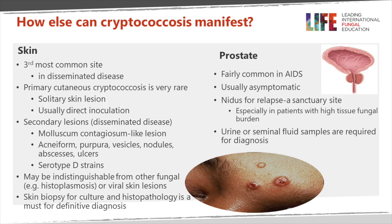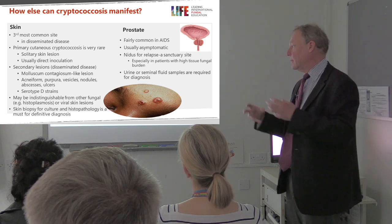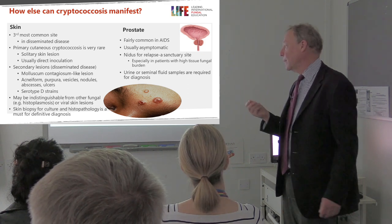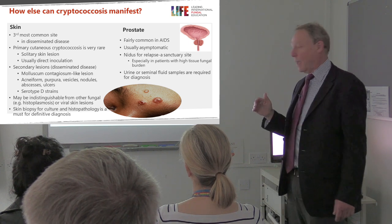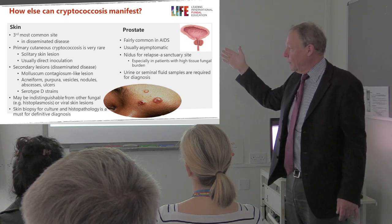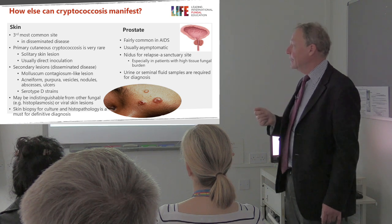Cryptococcus can also disseminate from the lungs to the skin, which is the third most common site of infection. Very rarely you can get a pure skin infection. It looks like molluscum contagiosum — you can see lesions with raised edges and an ulcer-like center. You can also have subcutaneous nodules which don't ulcerate through the skin. When examining patients for cryptococcus, it's important to palpate the skin for subcutaneous nodules. This is particularly caused by serotype D strains within the Cryptococcus neoformans var. grubii group, and clinically these look very like histoplasmosis — so a skin biopsy is required to make the diagnosis if cryptococcal antigen testing is not apparent.